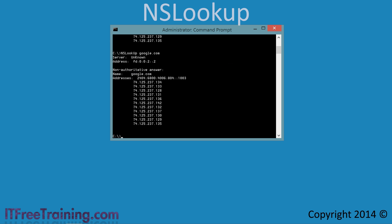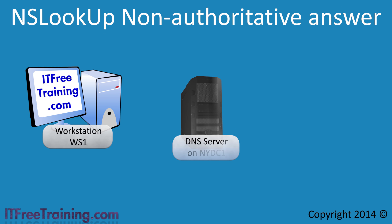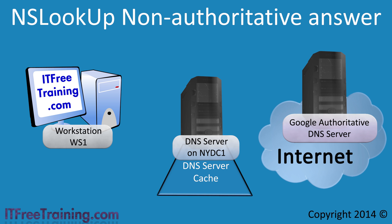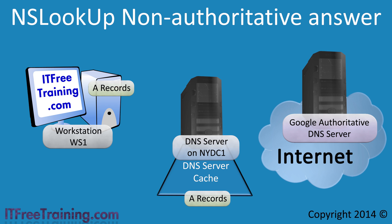Let's have a closer look at what has happened. The network asked a local DNS server to resolve the DNS name Google.com. The DNS server first looks in its cache; since I cleared the cache before this video, Google.com was not there. Because the DNS server did not know the answer, it contacted an authoritative DNS server for Google on the internet. The DNS records for Google.com were transferred from the authoritative DNS server to the workstation, and a copy was stored in the cache of the DNS server. In this case, NSLookup reports these records as coming from an authoritative server, because the records essentially came from an authoritative source even though they passed through another DNS server to reach the workstation.